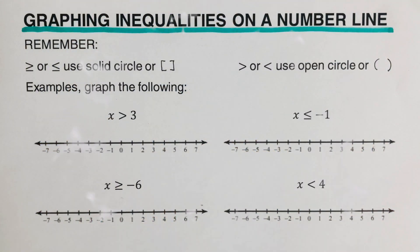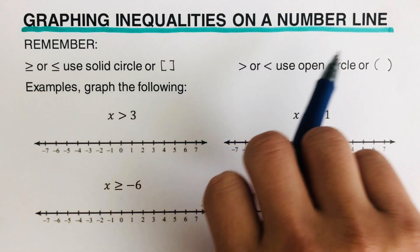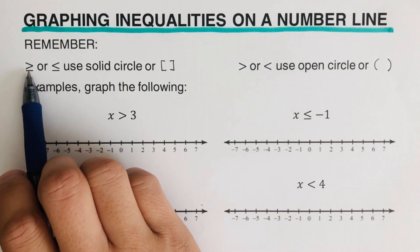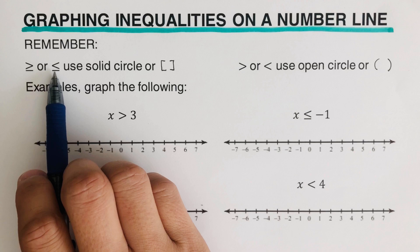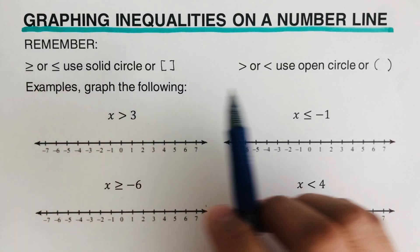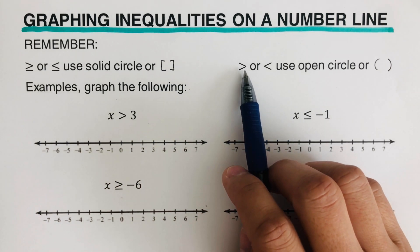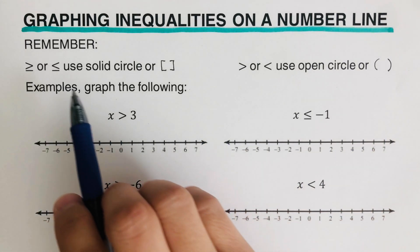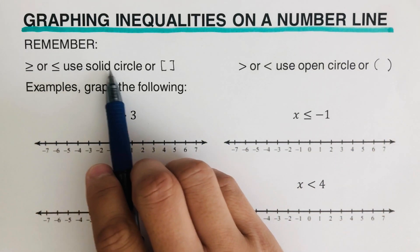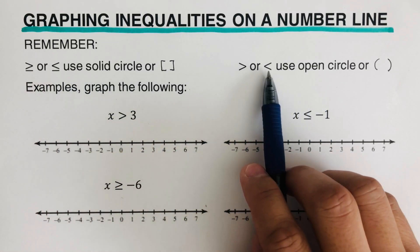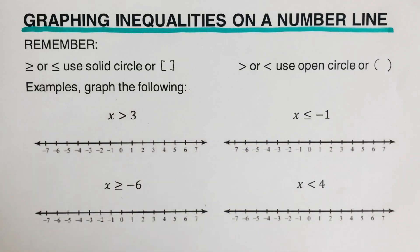Hello everyone. In this video we will be graphing inequalities on a number line. Before we jump into the examples, we need to remember that if we have 'greater than or equal to' or 'less than or equal to,' we use a solid circle or bracket. On the other hand, if we have 'greater than' or 'less than,' we use an open circle or parentheses.